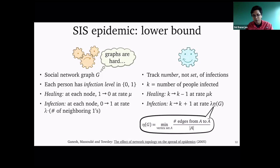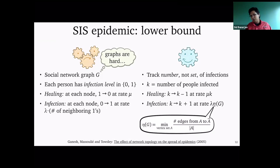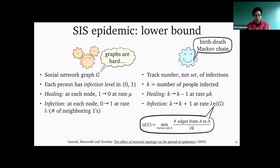The particular quantity that turns out to be important is what's called the isoperimetric constant of the graph. The formal definition says: if you look at any K people who are infected, what's the set of susceptible neighbors they have — specifically the smallest set of susceptible neighbors that any set of K infected people could have? If you have any K infected people, each person is trying to infect each of their neighbors at rate lambda. Since this is the smallest boundary through which infection grows, this process under-dominates the true infection process. But now we have a birth-death Markov chain, which can be analyzed in closed form.